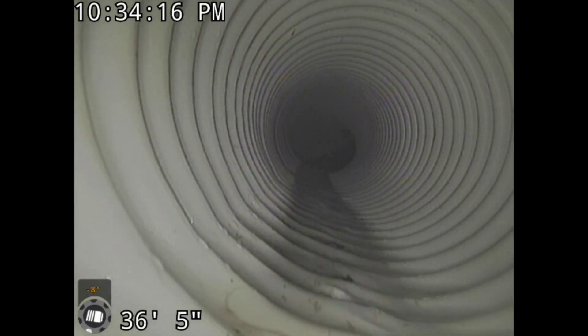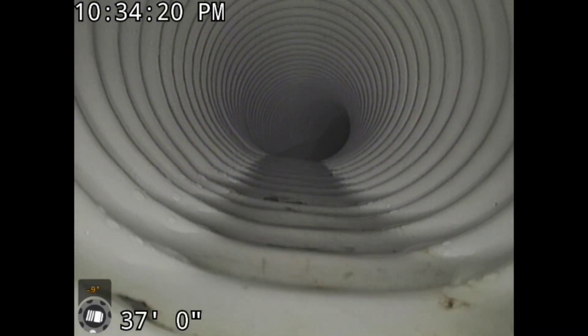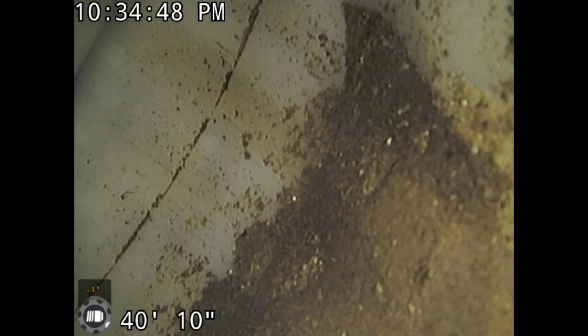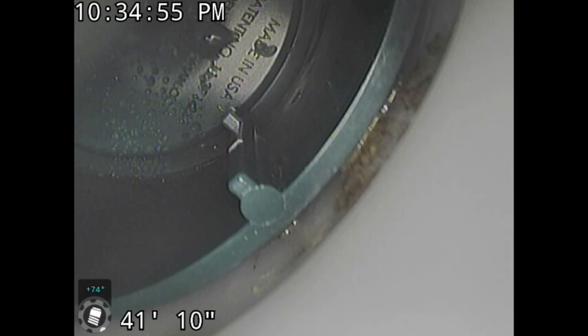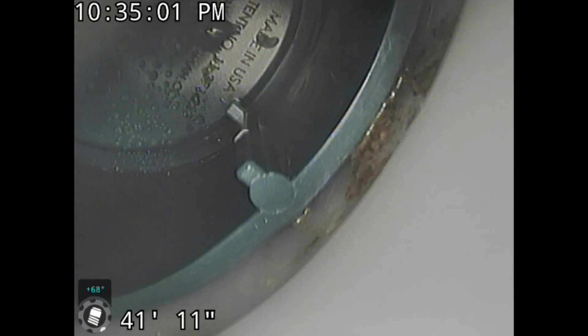This is an FDM 3-inch Pro Kit, and it's 41 feet long, so it does have some extra pipe on it. Now, I'm in the pop-up emitter at the not-quite-a-90, and I'm going to push the camera up until we hit the bottom of the pop-up lid. There it is. That's the inside of an FDM pop-up lid.